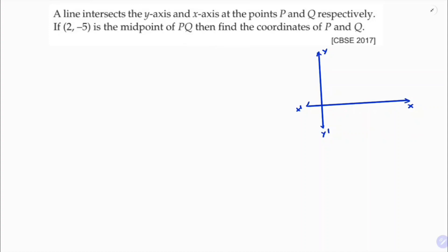At P and Q. The y-axis and x-axis, so this is P and this is Q. Now I'll take the point P as 0 comma y and Q as x comma 0.